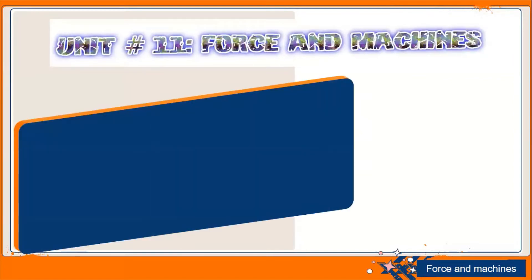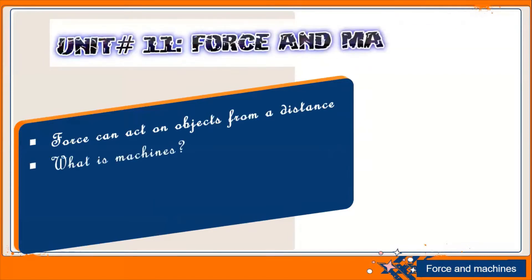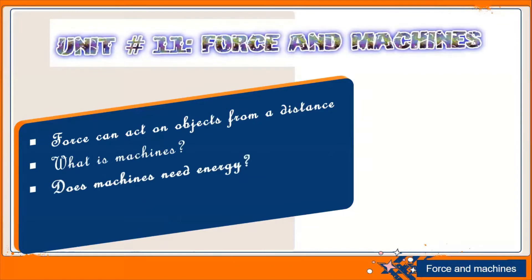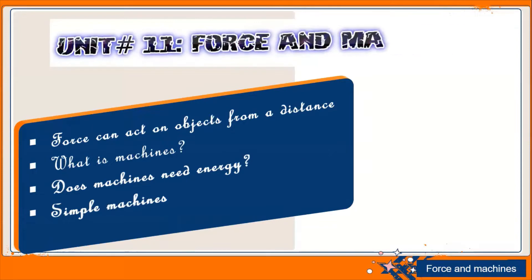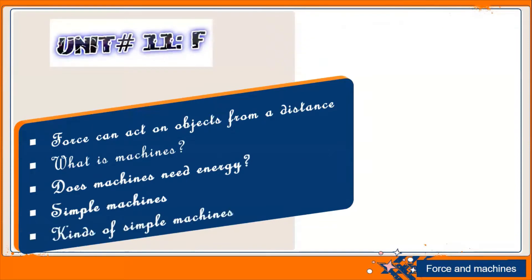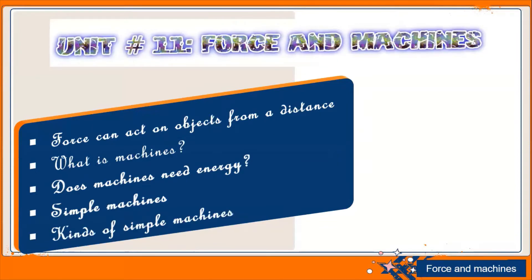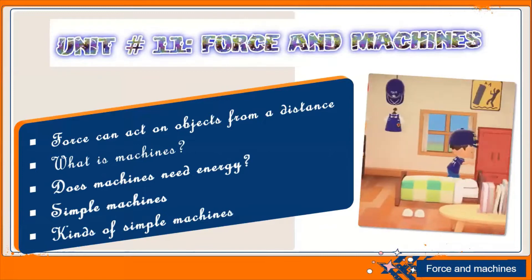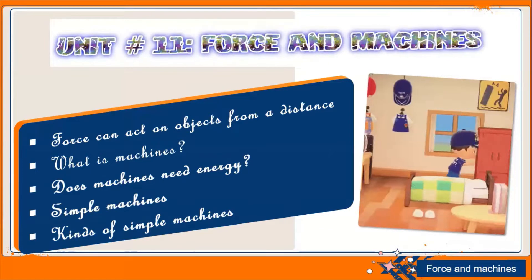We'll review our previous topics from Unit number 11. You already know about what is force, what is machine, how force can act on an object from a distance, what are the names of the simple machines, does machines need any energy to work, and the kinds of simple machines. After that we'll discuss the following question, question number one.